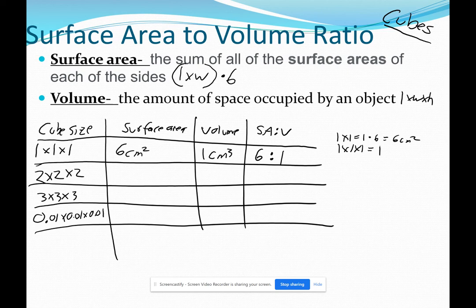In a 2 by 2 by 2, we do 2 times 2, which you guys know is 4. Multiply that by 6. And our surface area is 24 square centimeters. Our 2 by 2 by 2 volume is length times width times height, which is 2 times 2 is 4, times another 2 is 8. And that's centimeters cubed. So that's 24 to 8 ratio, which you all know reduces down to a 3 to 1 surface area to volume ratio.